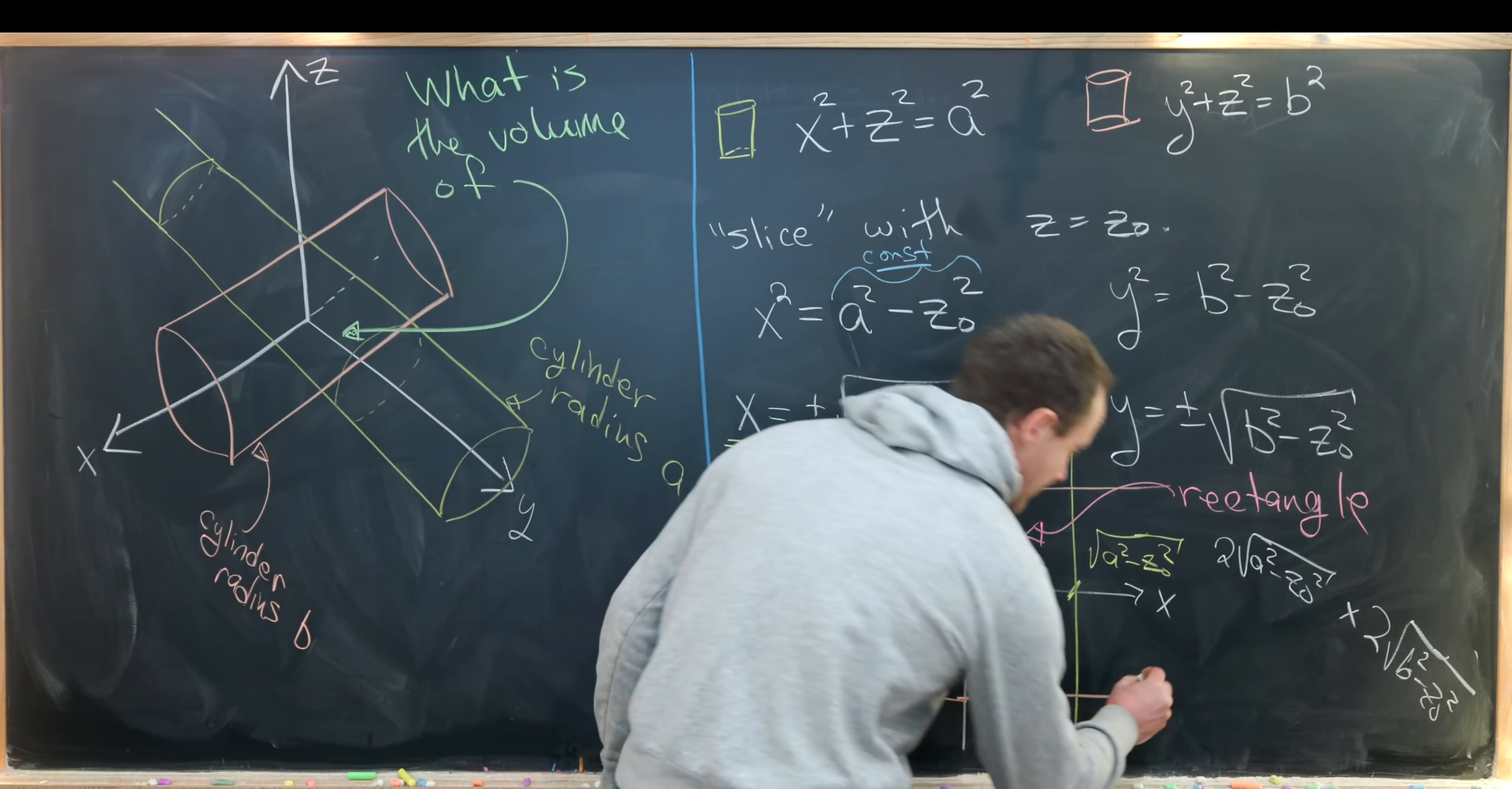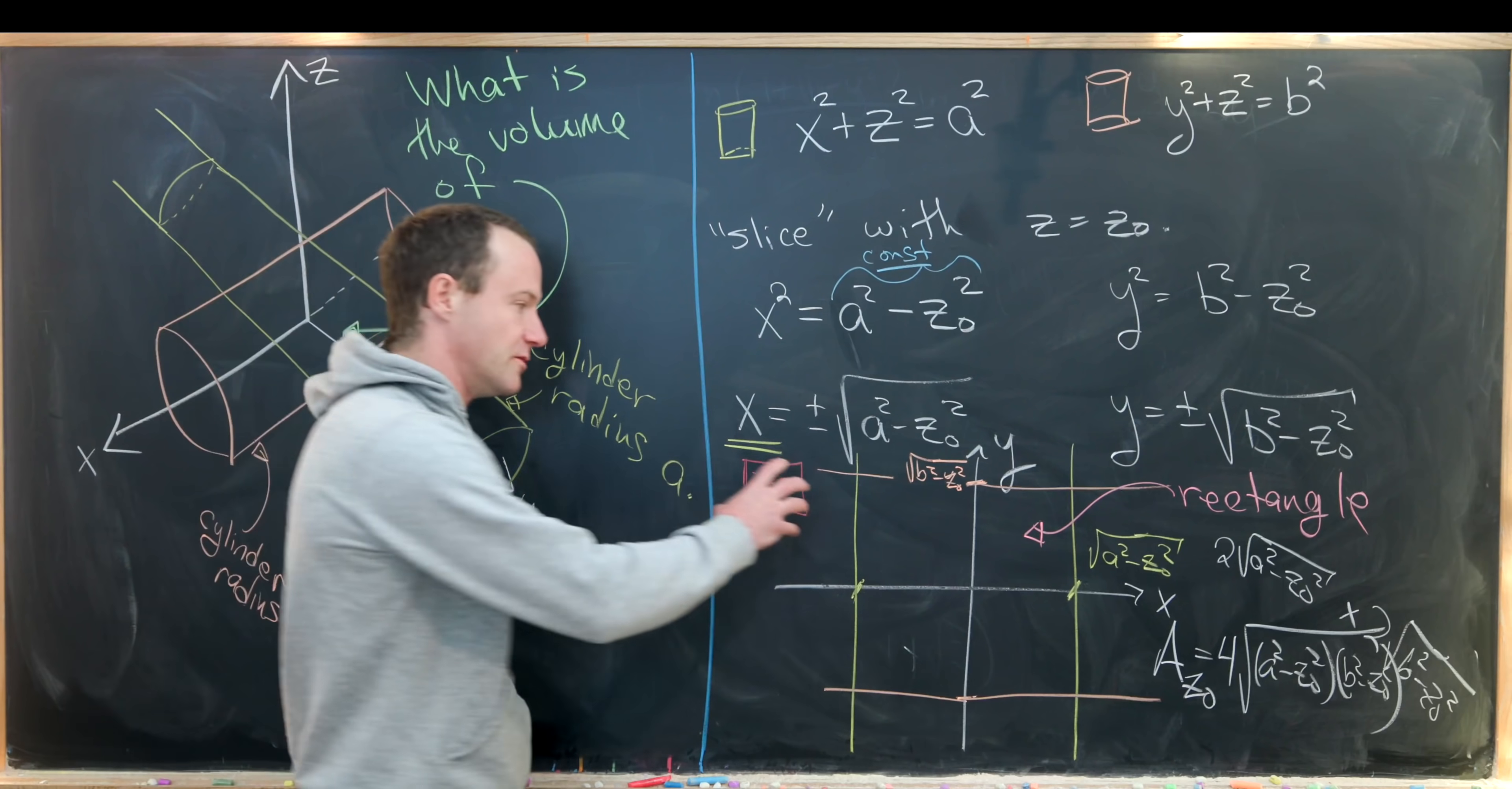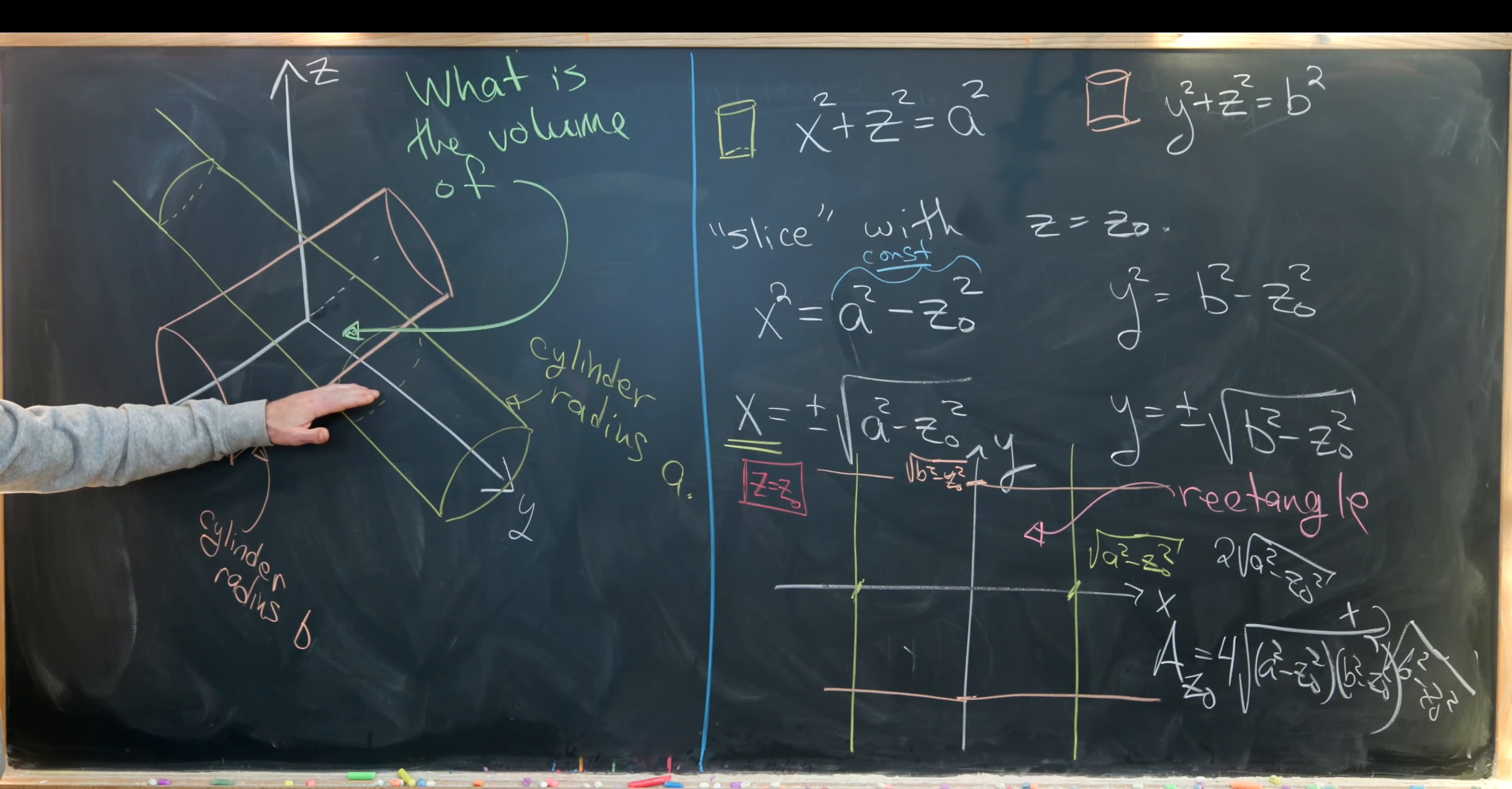It's easy to calculate the area of a rectangle. So the area of this rectangle, maybe I'll put A sub z naught because it depends on this z naught point, will be equal to 4 times the square root of a² - z₀² and then b² - z₀². Then how do we calculate the volume if this is the area of one of our slices? Well, we'll just integrate that area from the smallest z value to the largest z value.